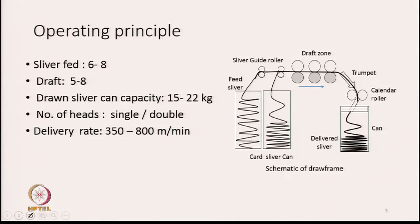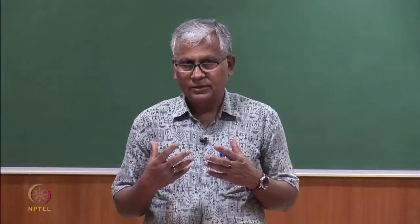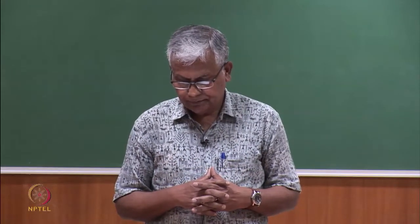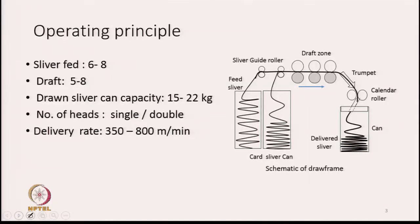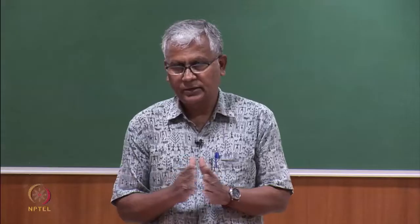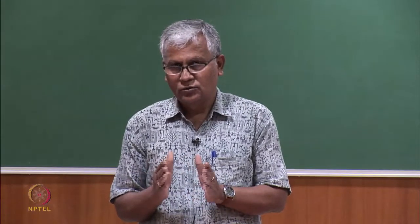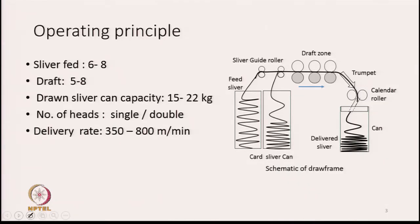The operating principle of the machine: if we see the diagram on the right-hand side, there are feed sliver cans. In the diagram it shows two cans, but in a machine there could be actually 16 cans which are fed. Each machine will have either one or two production heads — two production heads are more common. Each head will need 6 to 8 input slivers, and there will be one single output sliver from each head.